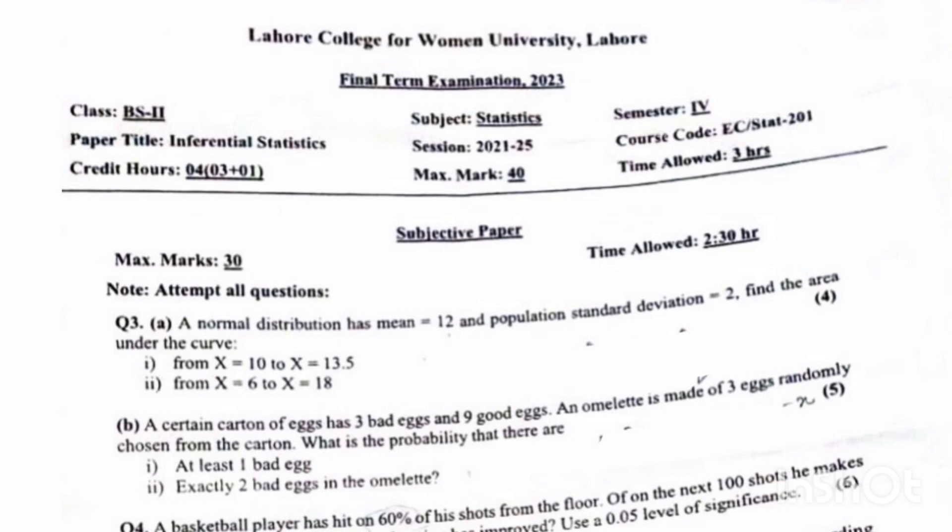A carton of eggs has 3 bad eggs and 9 good eggs, and an omelette is made of 3 eggs randomly chosen from the carton. What is the probability that they are: first option, at least 1 bad egg, aur doosri option, exactly 2 bad eggs in the omelette.